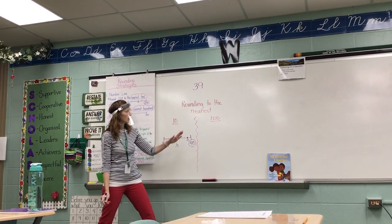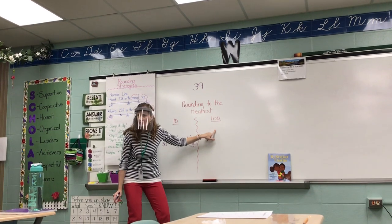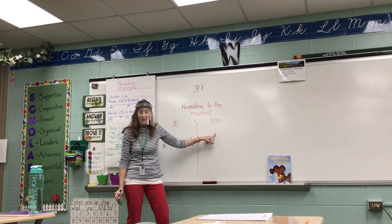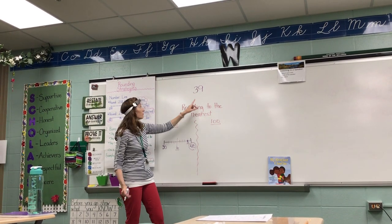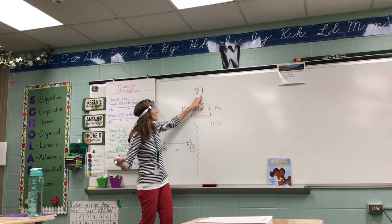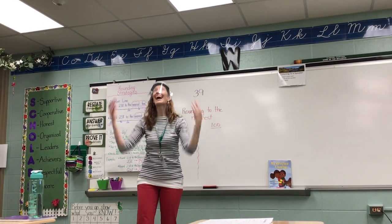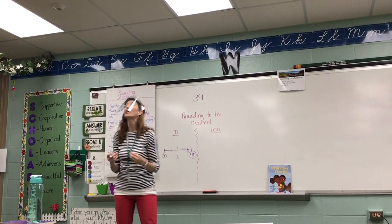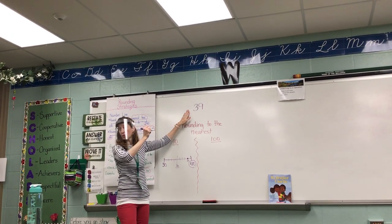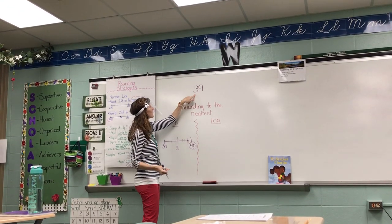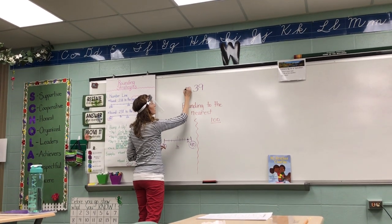Now we say, I've got to round 39 to the nearest hundred. You all should be looking at me and saying, 'You can do this, Mrs. Dunn!' But I'm not sure I can — I've got my ones, my tens — there's no hundreds place. Kelly just said 'yes there is!' Kelly, tell me what number is there. A zero — it's invisible, but it's there. I'm going to make it visible now. I've got my ones, my tens, my hundreds — I'm going to put a zero right there.